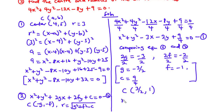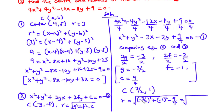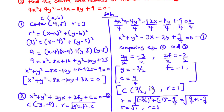Now let's find the radius: R = √(G² + F² − C) = √((−3/2)² + (−1)² − 9/4) = √(9/4 + 1 − 9/4) = √1 = 1. So the center of the circle is (3/2, 1) and the radius is 1. This is how to find the center and radius when the equation of the circle is given.